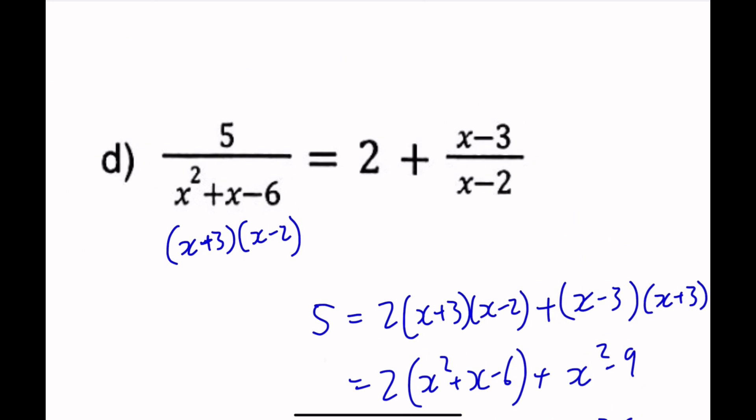Also, x cannot be 2 or negative 3 — those are the non-permissible values. And that's it for Part 4.